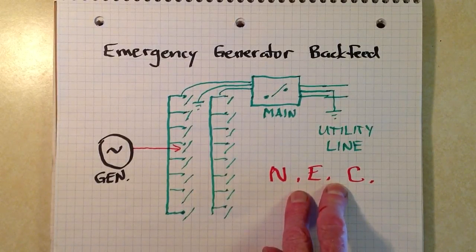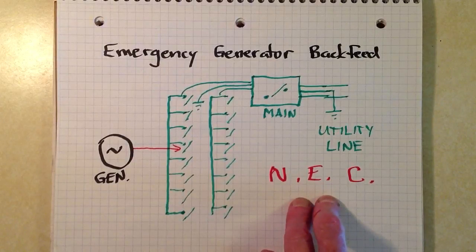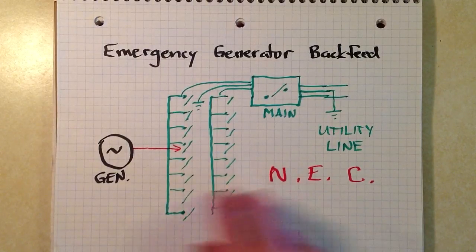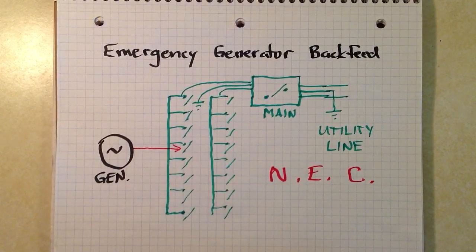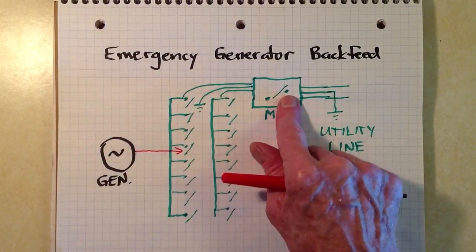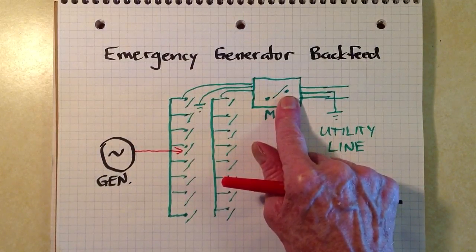But this particular practice, as far as I'm aware, violates the National Electrical Code. What you do if there's a power outage, say during a storm, is you shut off the main breaker at your house first.